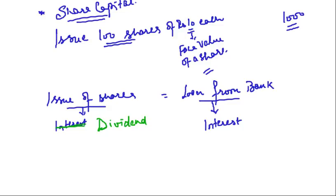That is what we discussed in the last lecture about the basics of share capital — issue of shares, face value of a share. Issue of shares is equal to a loan from the bank: if we take a loan from a bank we pay interest, and if we take money from outsiders and issue shares, we pay dividend to the shareholders — those who have the shares in hand. The face value of each share can be rupees 10 or rupees 100; it is given in the question. We are dividing our money into smaller denominations.